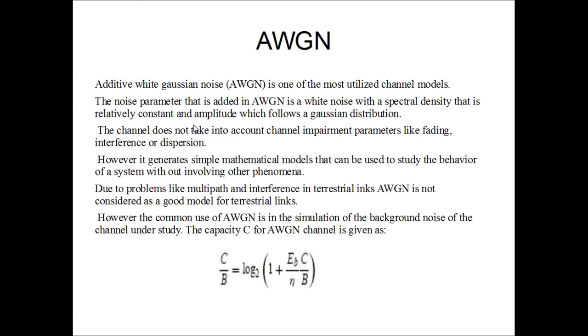In AWGN, there is a single noise component. It is a white noise which has a spectral density that is relatively constant and the amplitude follows a Gaussian distribution. It is also true that the channel does not take into account some major channel impairment parameters like fading, interference or dispersion.